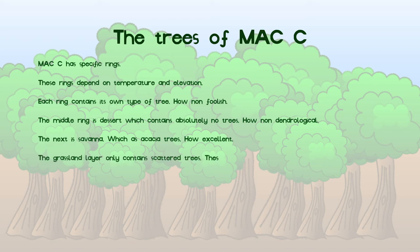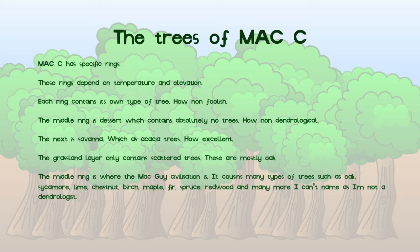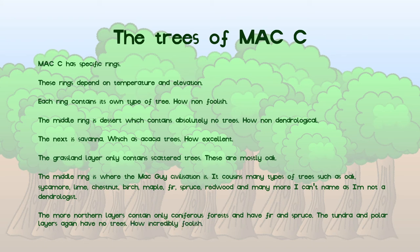The grassland rings only contain scattered oak trees. The middle ring is forest and grasslands and contains the excellent Mac and NPC guy civilization. It also contains the most amount of trees, which are listed here — I cannot name all of them as, unlike some uncles, I am not a dendrologist. The far north layers have only coniferous trees, and the top two layers are too cold to sustain trees, making them foolish.